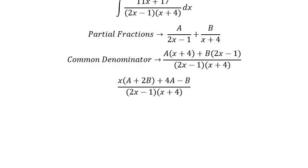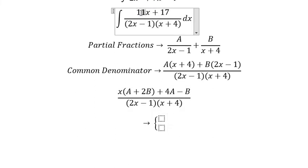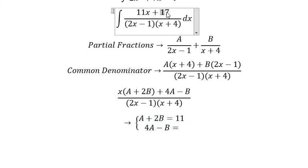Next we can use the system of equations. So we know that for x we got 11, that means A plus 2B should be equal to 11. For 4A minus B should be equal to 17.